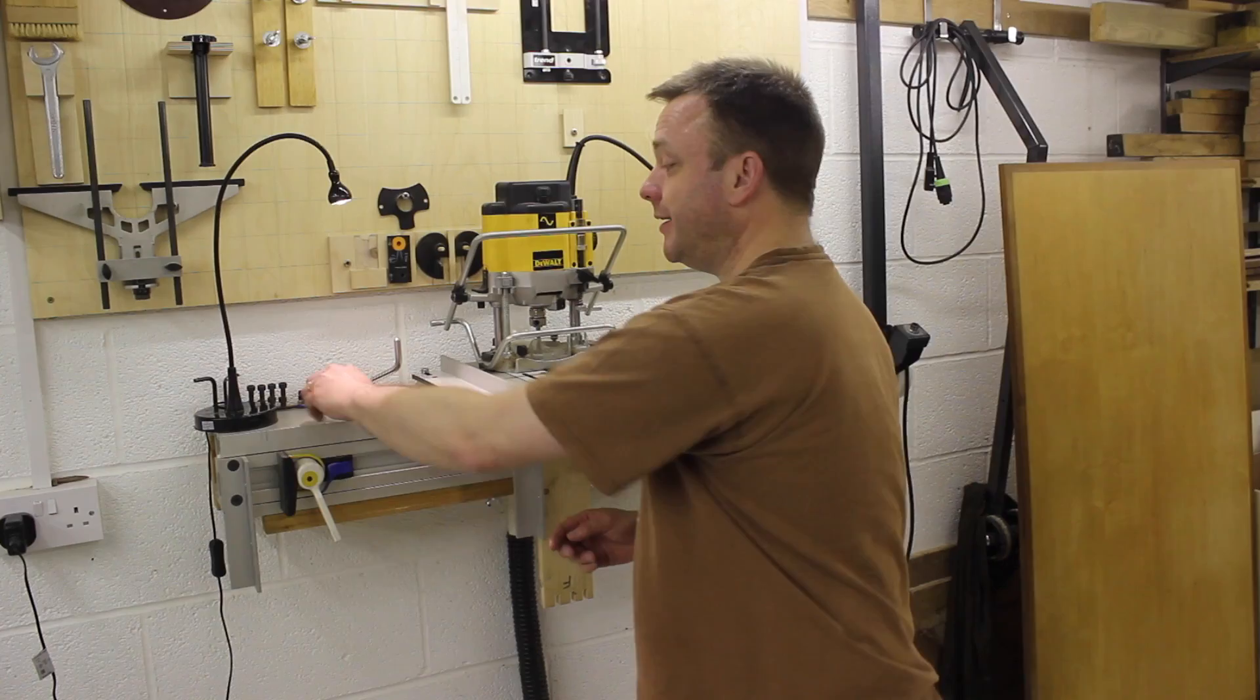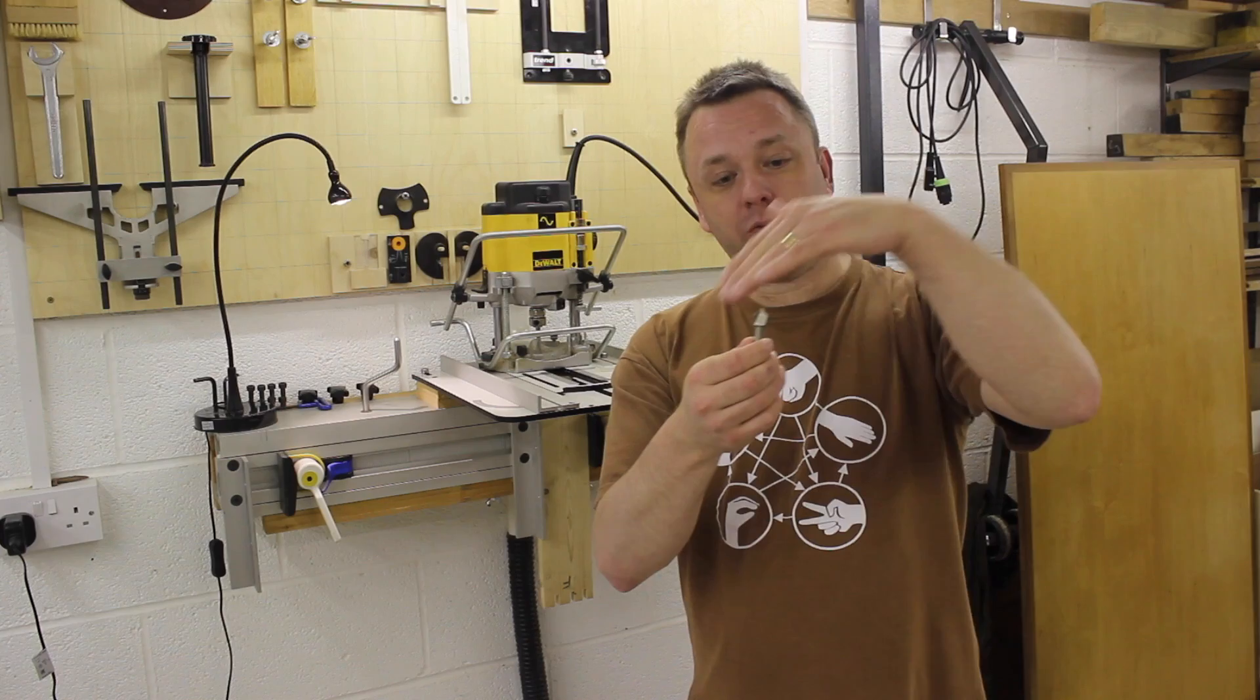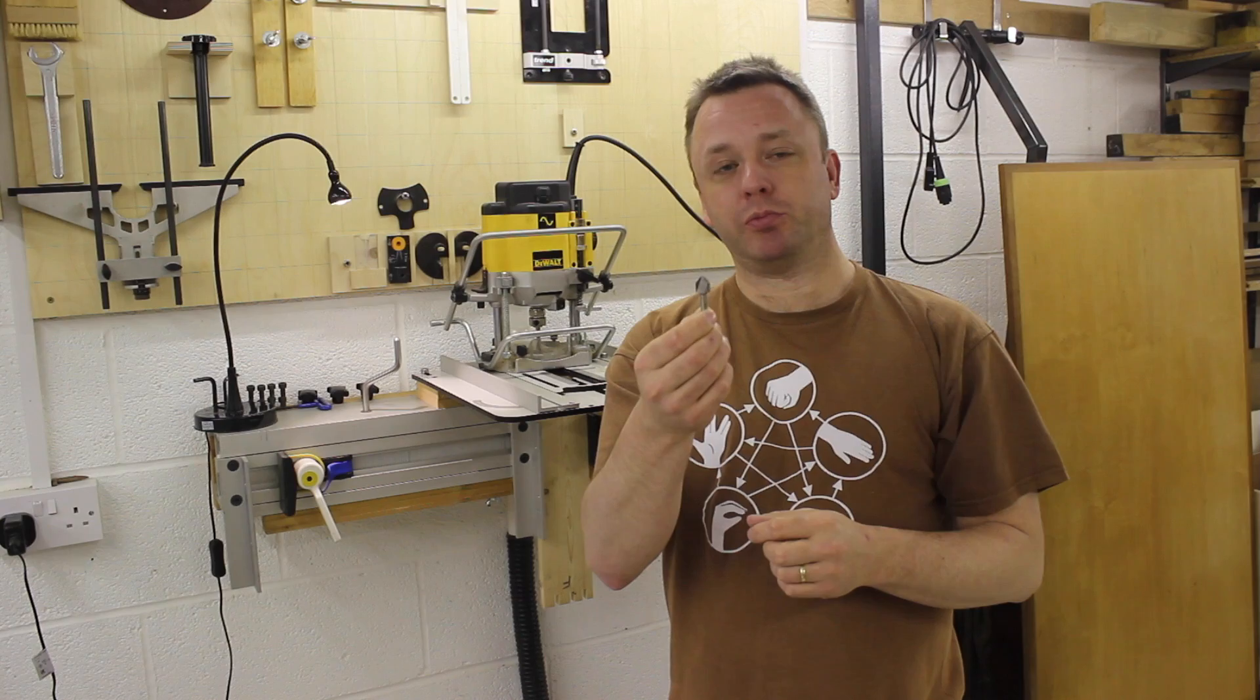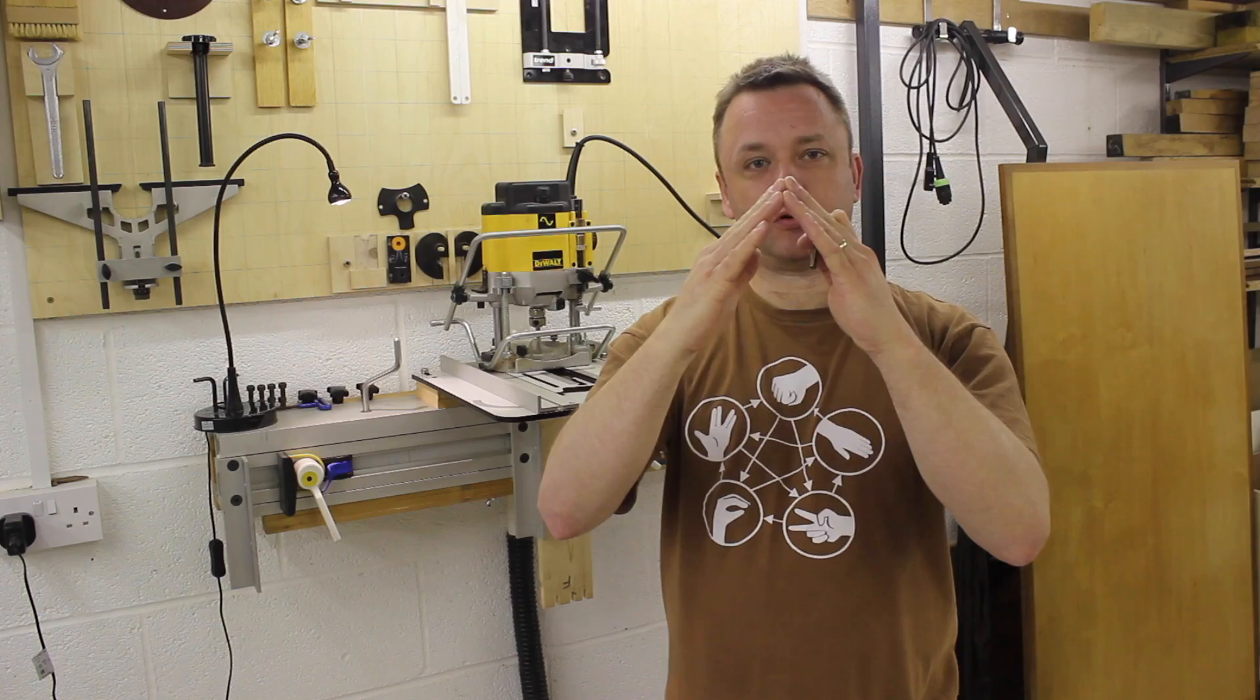Well, basically we need a simple router bit like that, which is a V profile. It needs to have a reasonably sharp point, nothing curved. So basically a triangular profile.